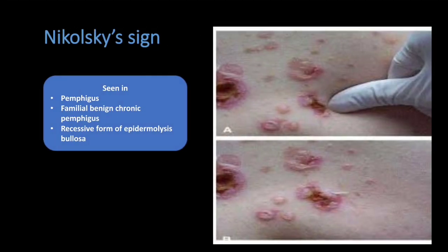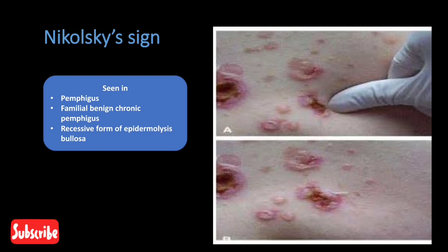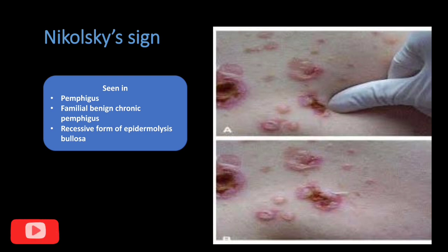Nikolsky's sign: it is seen in pemphigus, familial benign chronic pemphigus, and recessive form of epidermolysis bullosa. It involves loss of epithelium due to rubbing, resulting in a raw and sensitive surface.